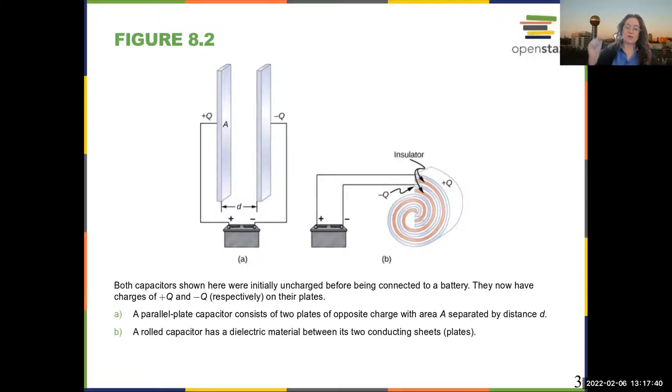You can make a rolled capacitor by using some type of material between them which is insulating. The material can be a dielectric, and we're going to talk about that later—what exactly that means—and in many ways they behave about the same.